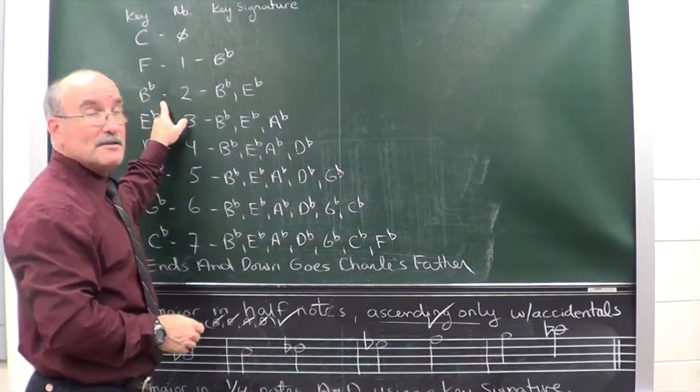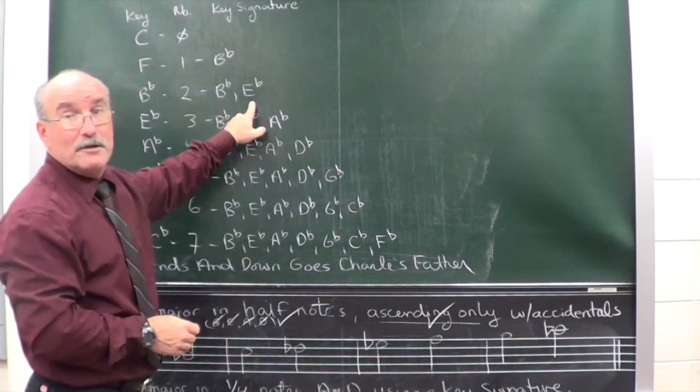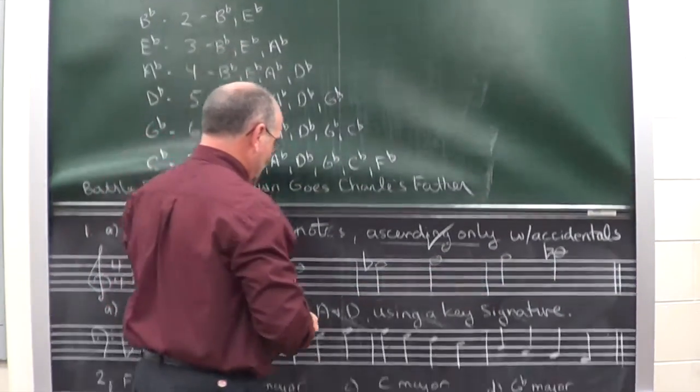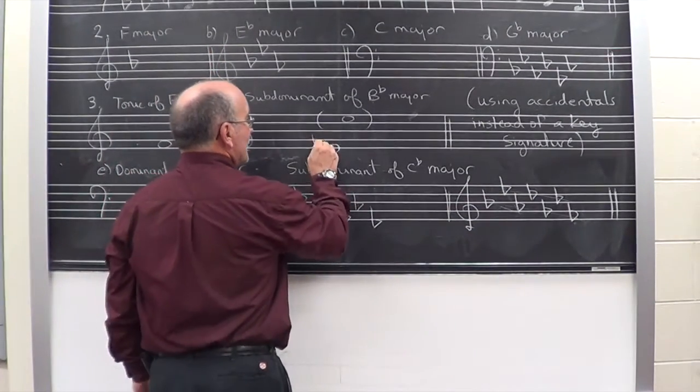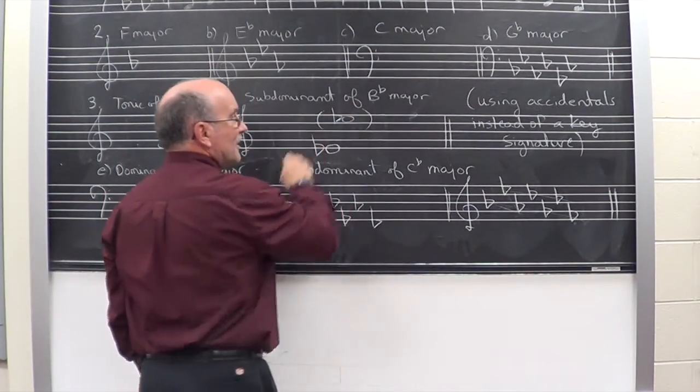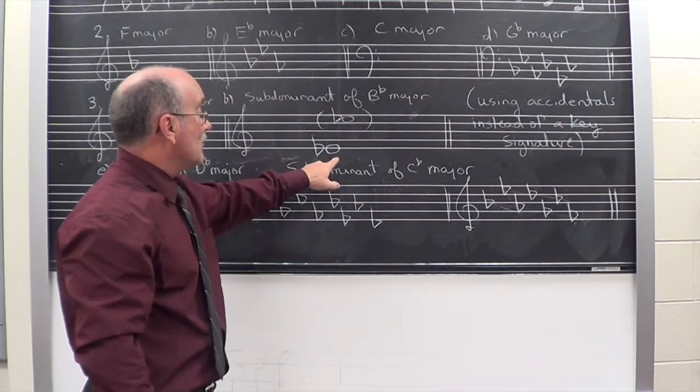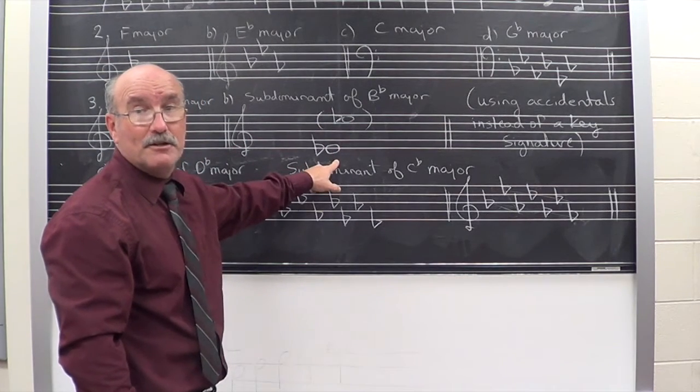However, you need to check the key signature of B flat major. B flat major has two flats. B and, oh, look at that, E flat. So the fourth note in a B flat major scale is E flat, not E. It's E flat. And it says using accidental, so I have to put the flat sign beside the note.